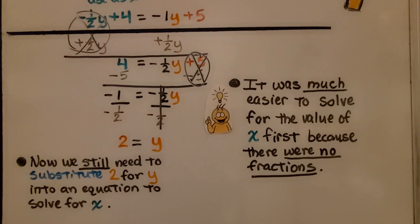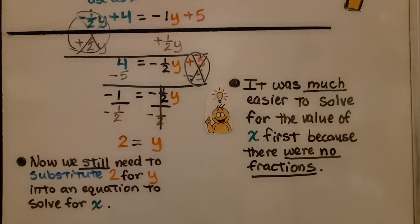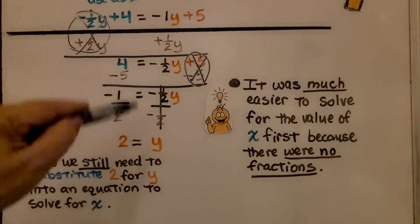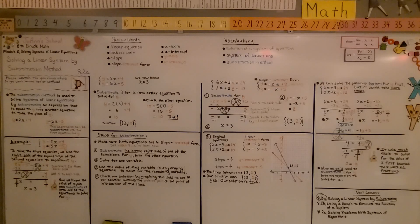We're finished with lesson 8.2a and moving on to part b — using a graph to estimate the solution of a system. Many students find the substitution method to be very confusing. I hope I explained it well and you understood it. If you did, hit that like button, have a great day, and join me for part b!